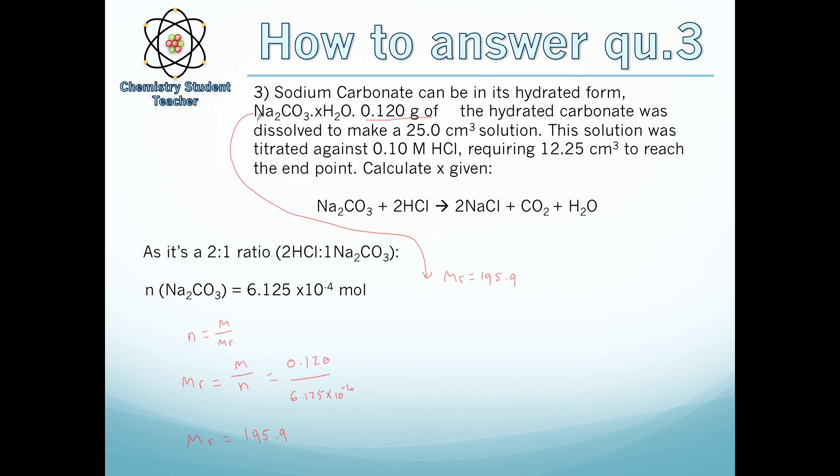We know the molar mass of this unknown is 195.9. We know from a periodic table what the Na₂CO₃ section is - sodium is 23, carbon 12, oxygen 16 approximately. So we can say that the number of xH₂O molecules equals 195.9 minus the sodium carbonate section, which in this case equals 106. So 195.9 minus 106 makes 89.9.